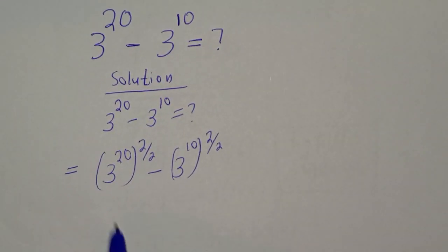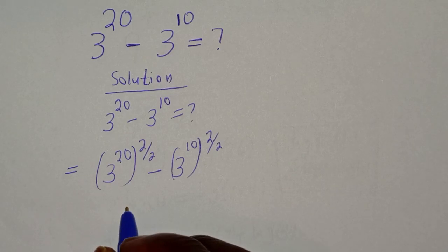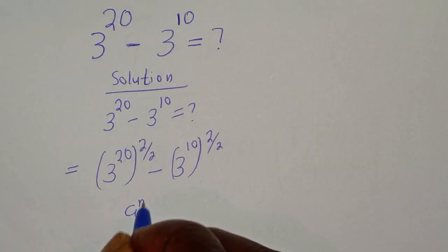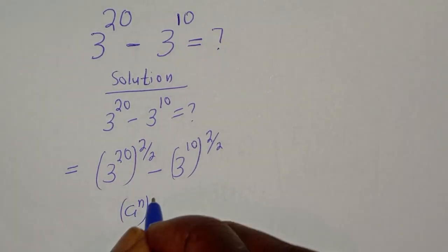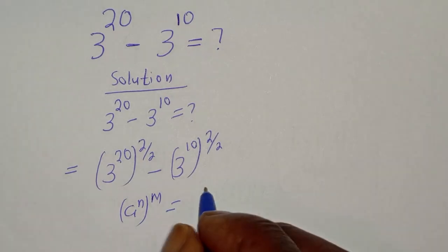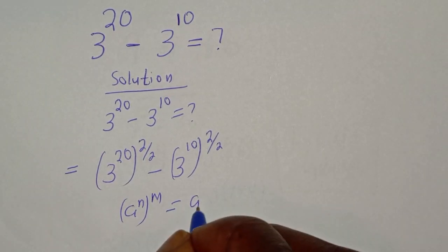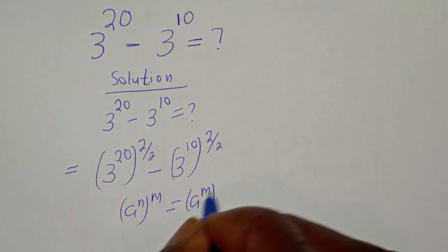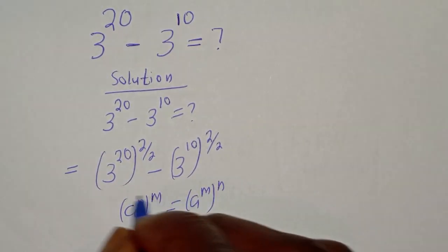Now take note of this rule: if you have a raised to power n to the power of m, this is equal to a raised to power m to the power of n.